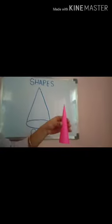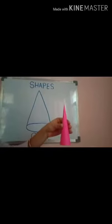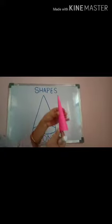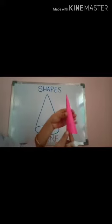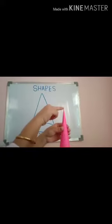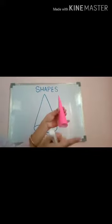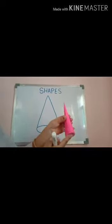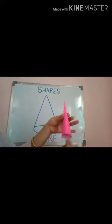Now, what we have learned? We have learned that this is a cone. A cone is a 3D shape. It has only one vertex, one edge, and two faces.